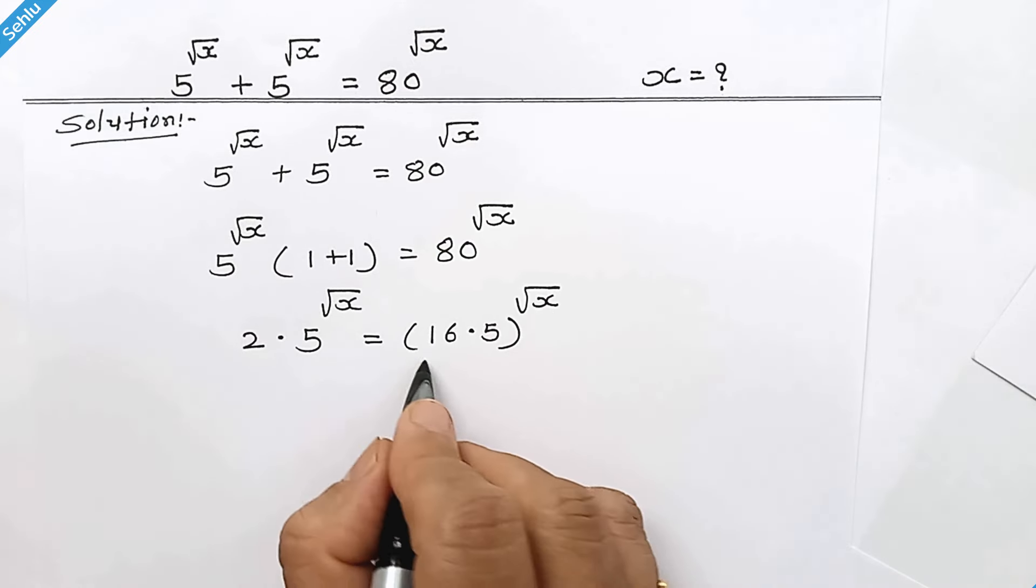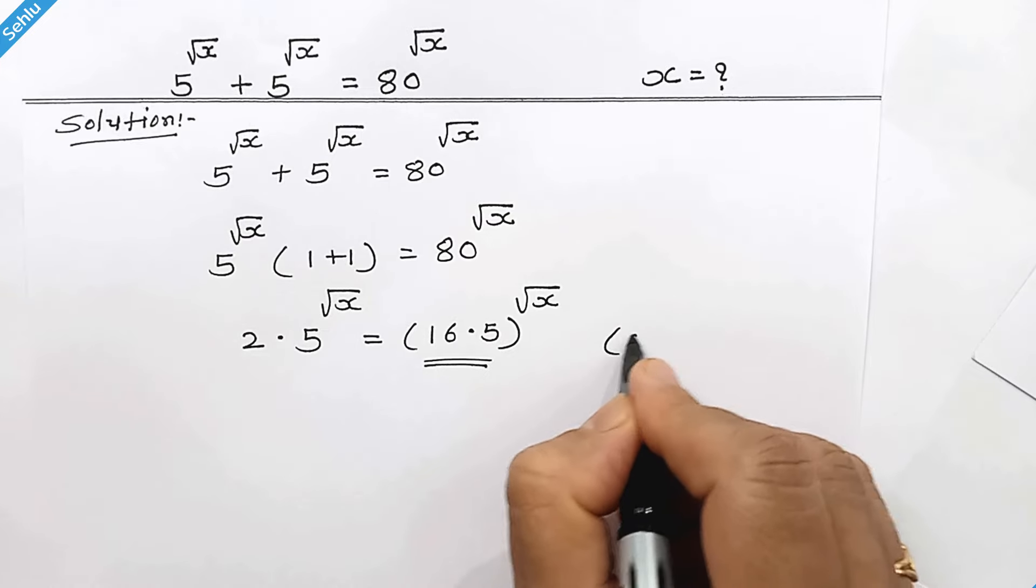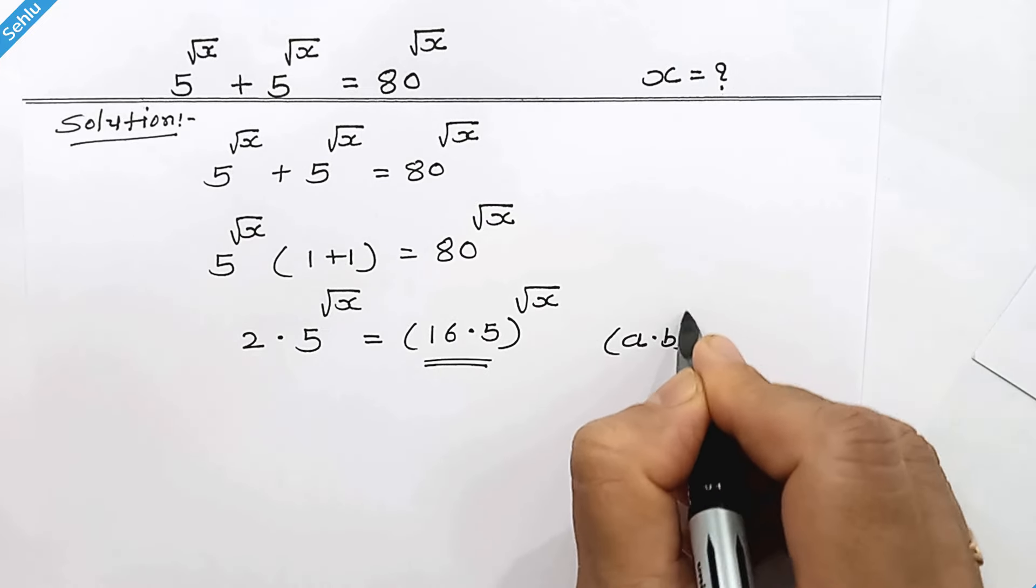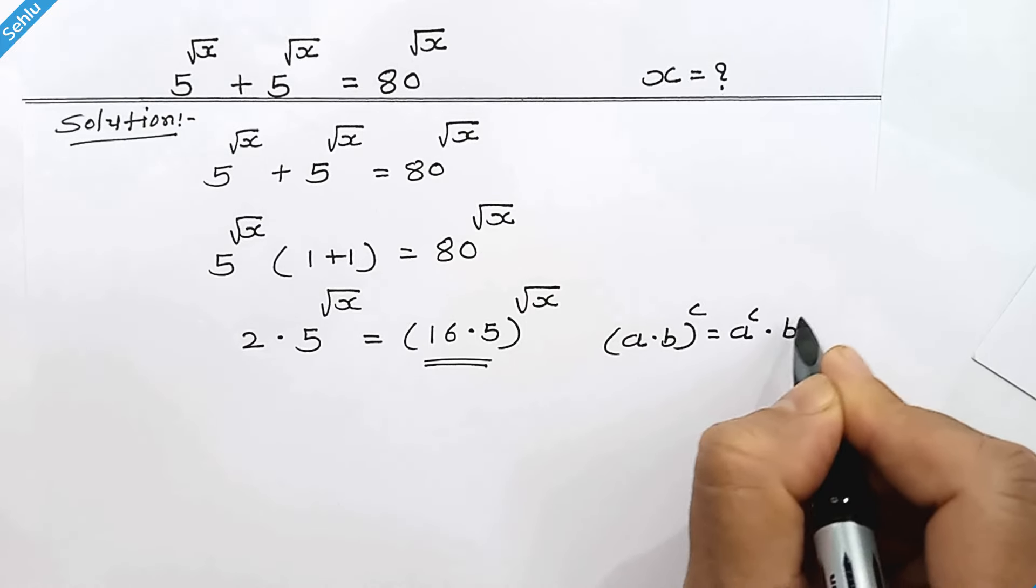Now for this part we can apply a rule which is: a times b whole to the power c, then it can be a to the power c times b to the power c.